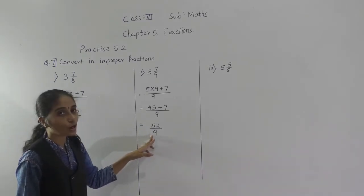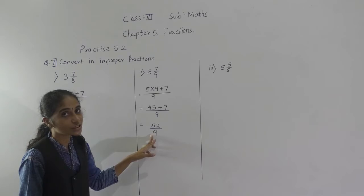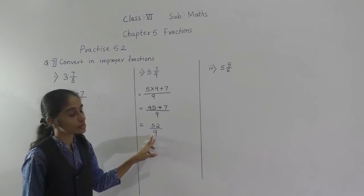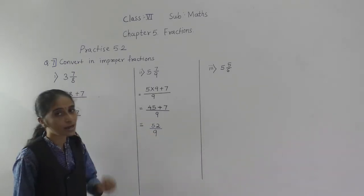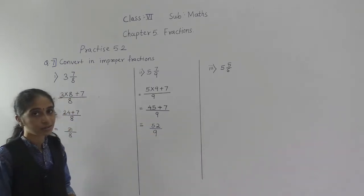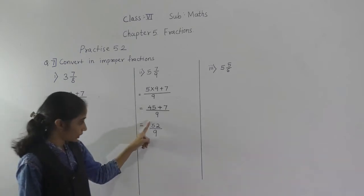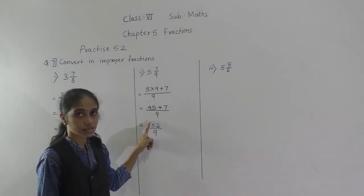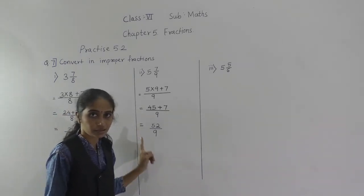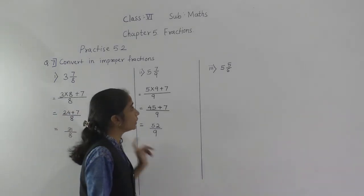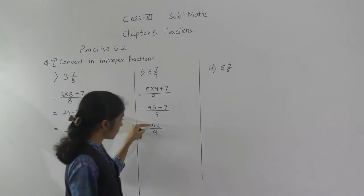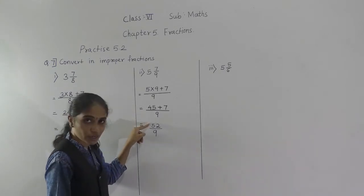Next example: 5 and 7 upon 9. We multiply 5 by 9 and add the numerator 7. So 5 nines are 45, plus 7 upon 9.